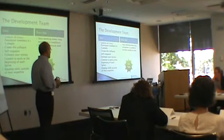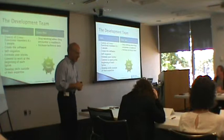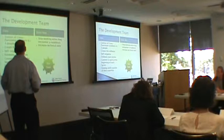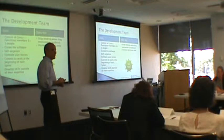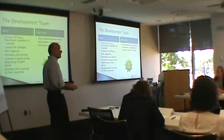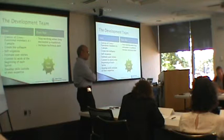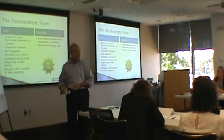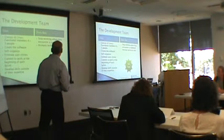The development team in the perfect model consists of six plus or minus three people — anywhere from three to nine seems to be the sweet spot. They create the software, self-organize, estimate user stories, commit to the work they can accomplish each iteration, and develop skills outside their expertise. What they don't do is stop working when they hit a roadblock. In scrum, the expectation is: can I go help someone else? Can I do backlog grooming? Can I help QA? What can I do? And they don't increase technical debt.